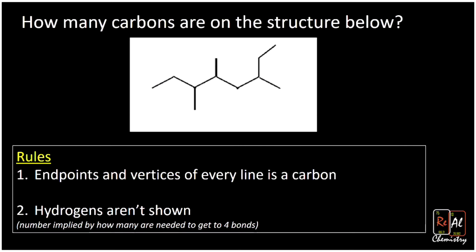So these line-angle structures are just a really lazy way to draw organic molecules, where we represent every single carbon atom as an endpoint or vertex, and we don't show the hydrogens. Let's practice this. Here we have the question: how many carbons are on the structure below? At first this can look a little challenging, but after you do it for a while it gets quite easy. All we're going to do is count the endpoints and vertices. You'll notice there's a ton on this molecule. So we have one, two, three, four — go ahead and pause the video and give it a try yourself. Five, six, seven, eight, nine, ten, eleven. So there are 11 carbons on that molecule.